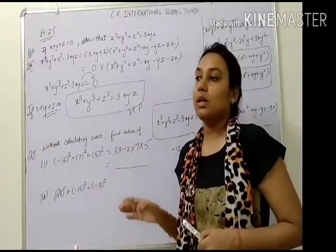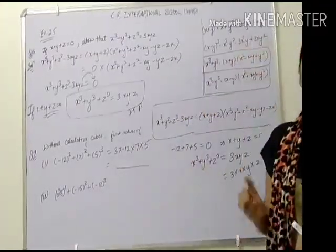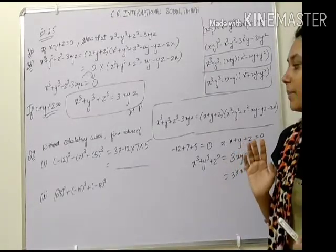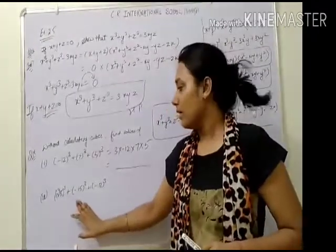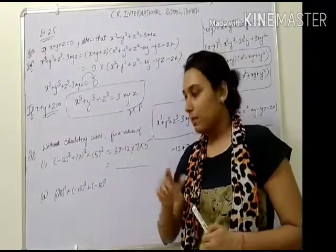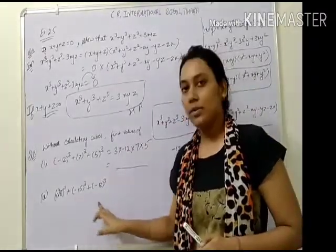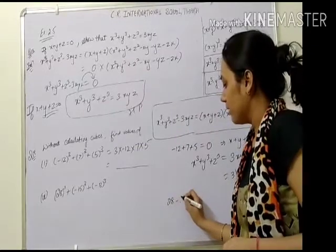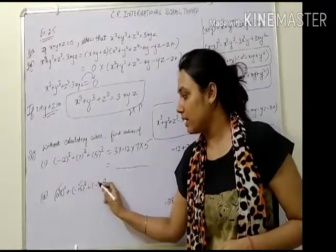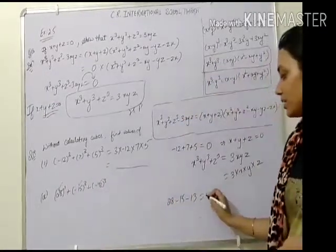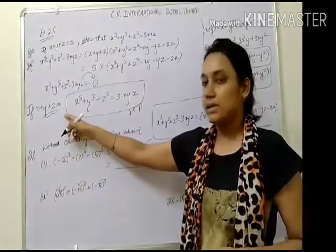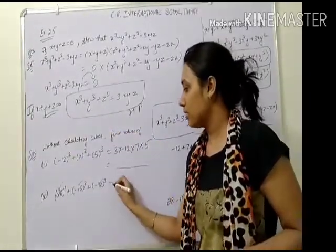Similarly for the next: 28 cubed minus 15 cubed minus 13 cubed. Check: 28 minus 15 minus 13 equals 0. Since the sum is 0, our theorem is satisfied — x plus y plus z equals 0 — so the sum of their cubes equals 3 times the product of the three numbers.